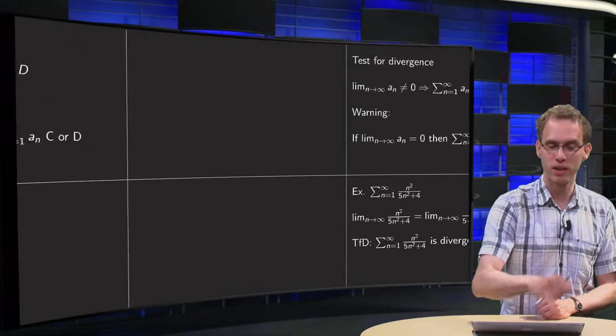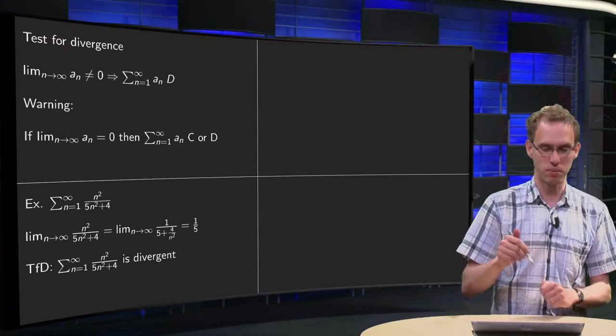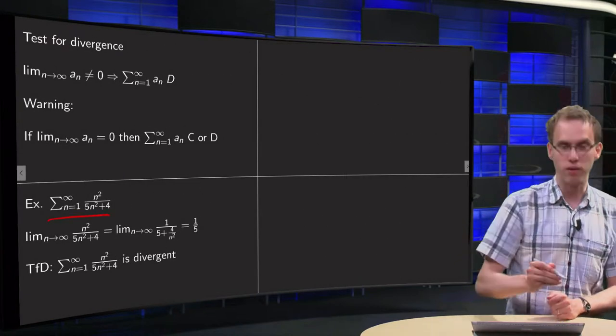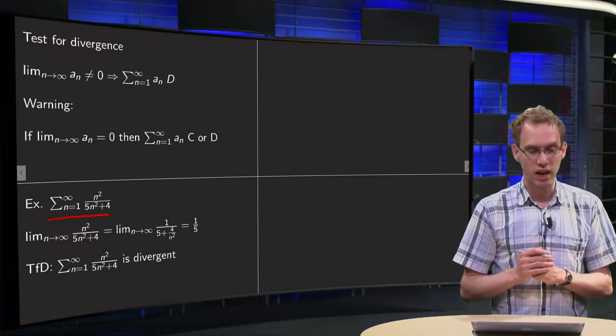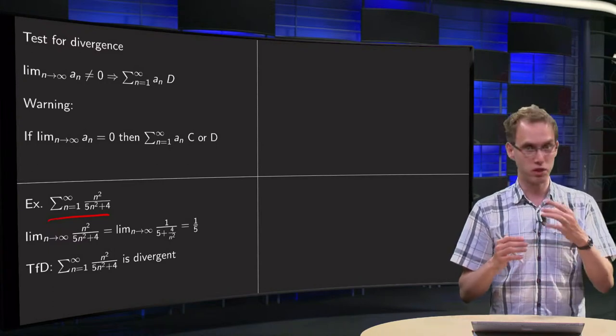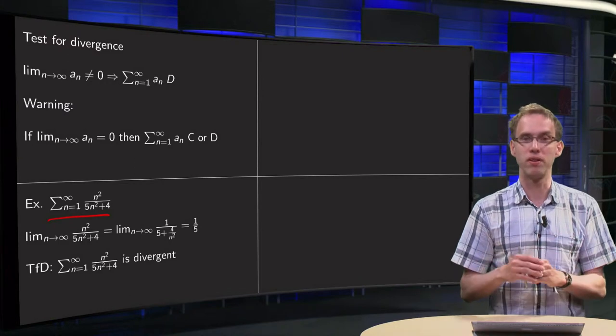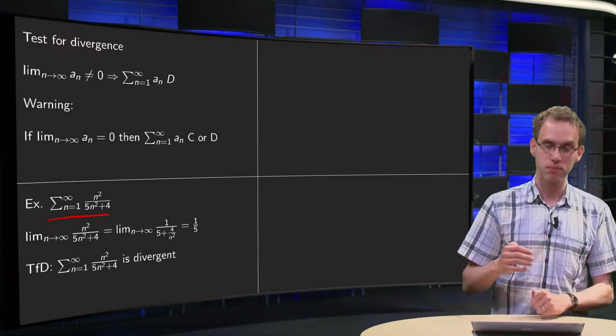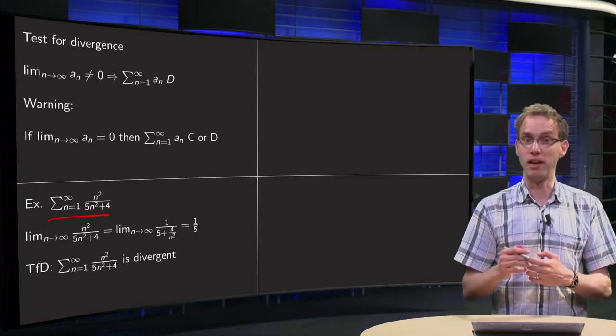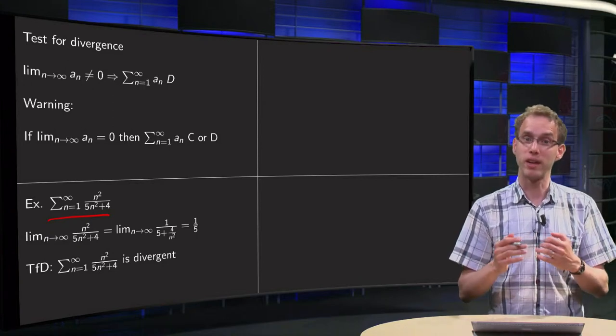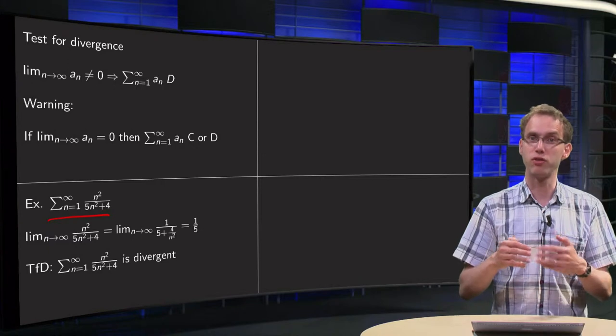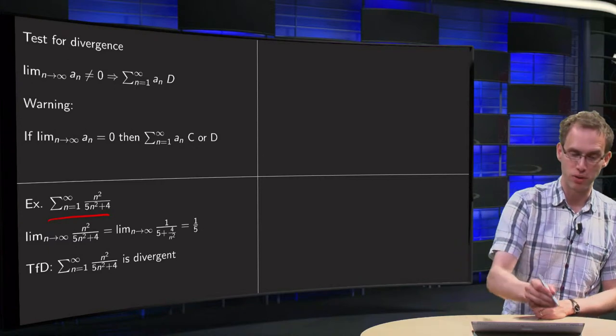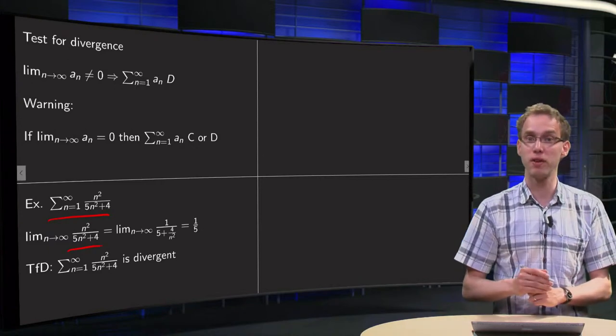Let us see whether we can apply this test to an example. So we have our series, n squared divided by 5n squared plus 4. It is not a geometric series or telescoping or whatever, so we really have to do some work here. Let us try to apply the test for divergence. What happens with the terms if we let small n tend to infinity?